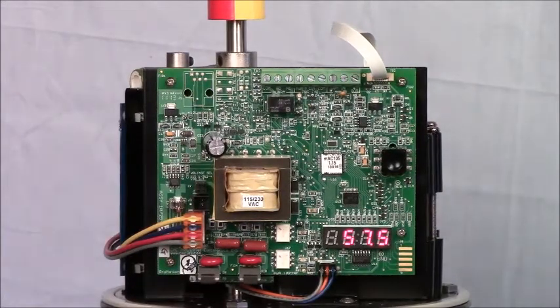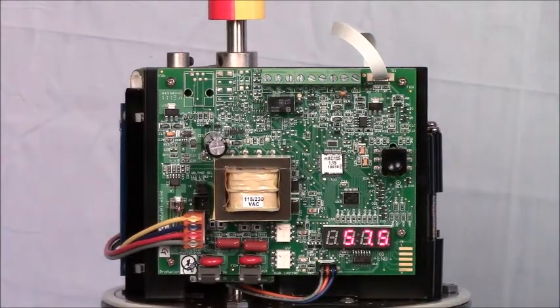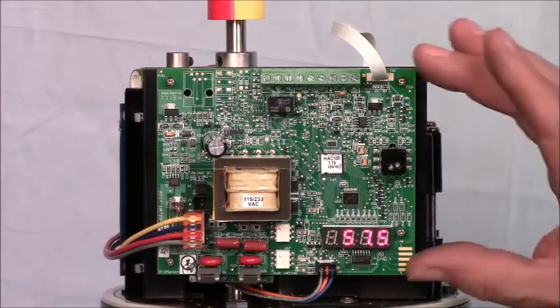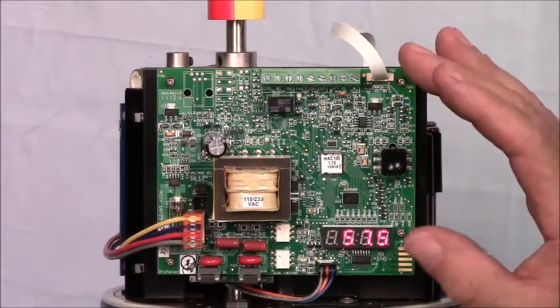So the first thing we're going to do is run an auto-calibration routine that will align the controller with the end to travel stops.